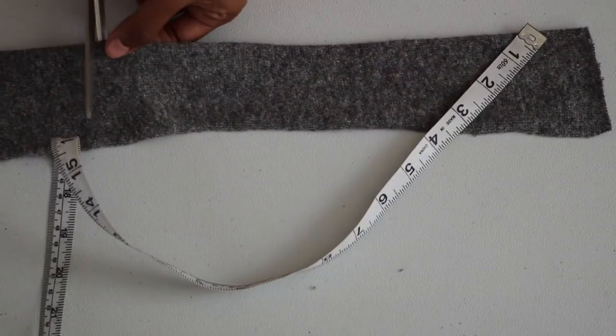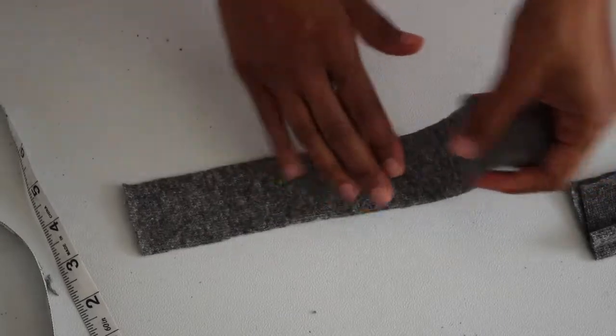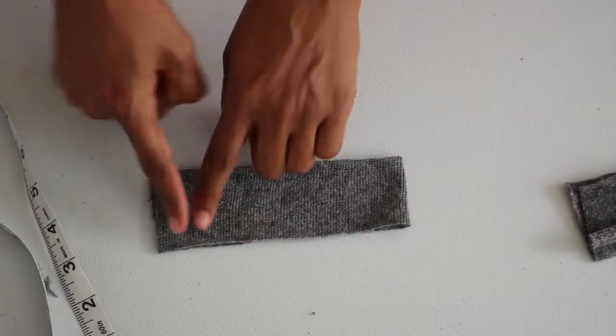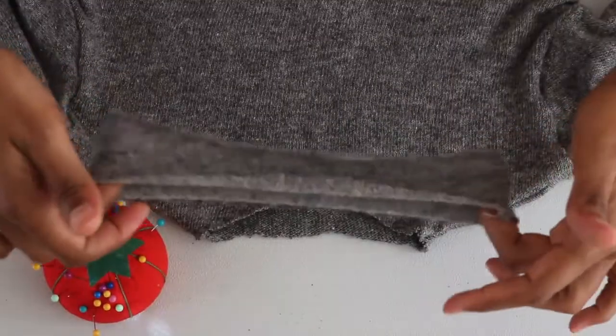Then I went ahead and cut around the material to make the band as even as I could. Then I folded that band in half and sewed the end down. And here's the band.